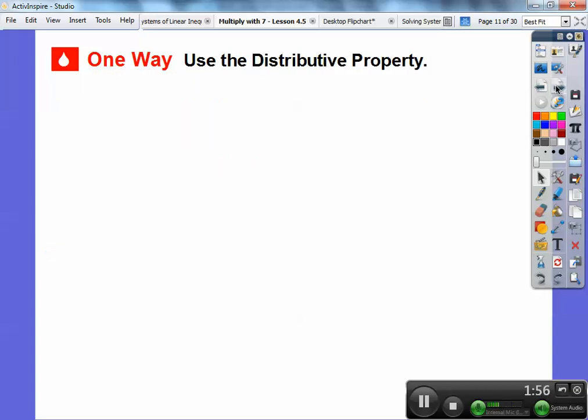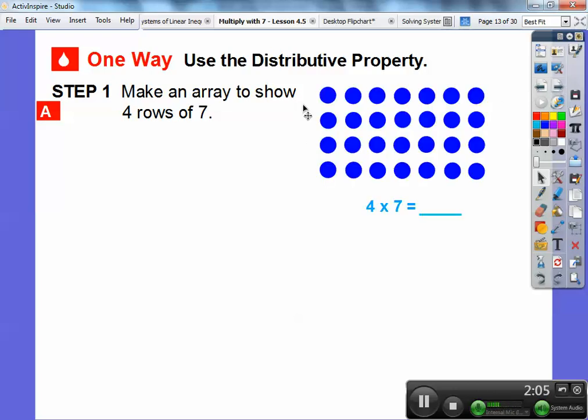Another way is to use the distributive property. We've used this several times. We can make an array to show four rows of seven. There's four rows of seven right here, one, two, three, four, and then we have seven.